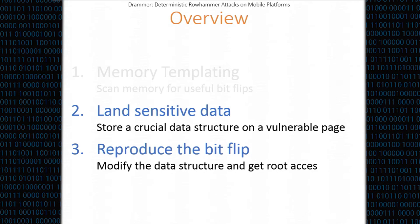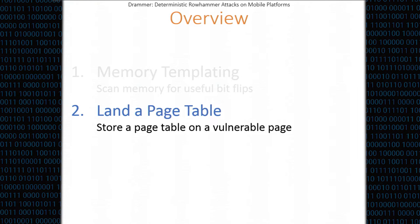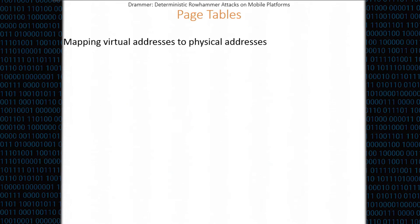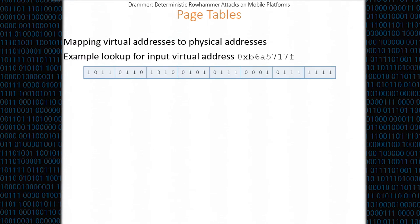Going back to the overview: the second step of our attack is landing sensitive data into the page where we just found the bit flip. And what sensitive data? We're going to look at page tables. We want to store a page table on the vulnerable page that is vulnerable to Rowhammer. Let's briefly go over what a page table actually does. A page table is used to map virtual addresses to physical addresses.